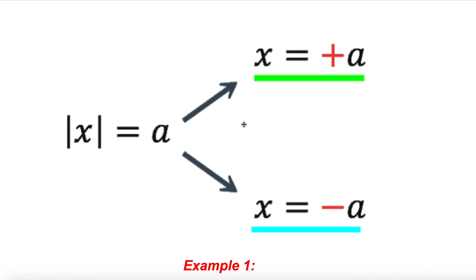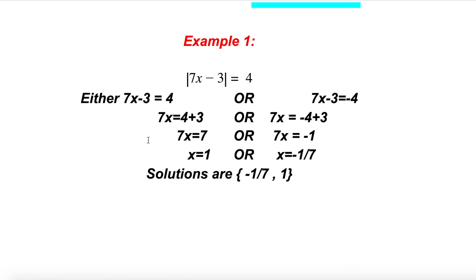Here is the formal rule: if the absolute value of x equals a, and a is positive, then either x equals a or x equals negative a — you give both cases. For example, if the absolute value of x equals 15, then x equals 15 or x equals negative 15. If a is negative, like the absolute value of x equals negative 7, just say no solution. If a equals 0, set what's inside equal to 0 — there is no 'either/or.'